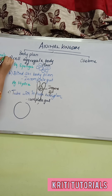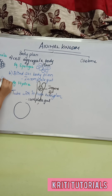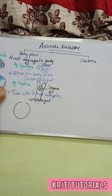From morula, during the course of development, the cells are arranged in a particular fashion and they form a cavity. The cavity which is formed in the next stage after morula is called blastocele.